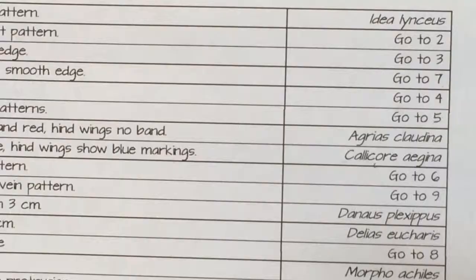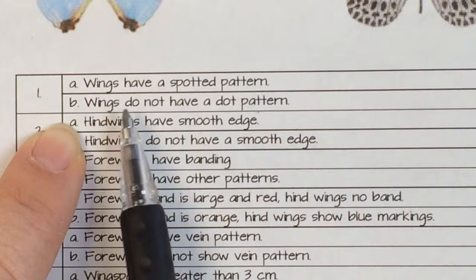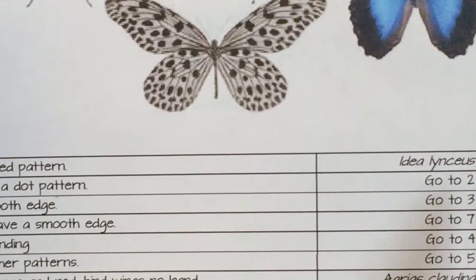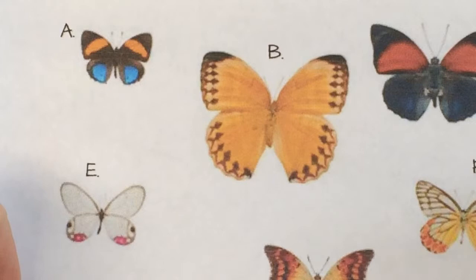So for each of our butterflies here today, you're going to go through and do the same thing. If we go to butterfly B, we're going to start back at question one: the wings have a spotted pattern, or the wings do not have a dot pattern. You just follow that one through. In this case, it looks like he does, but the spotted pattern is actually referring to this guy right here. So he does not have a dot pattern, which means we go to part two for him. Your teacher has a key to this one, so before you commit and glue everything down in your notebook, come check the key and just make sure you're doing it all right. If you have any questions, please let us know — we're happy to help.